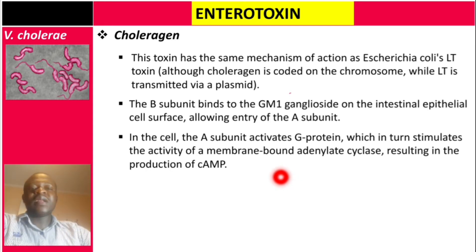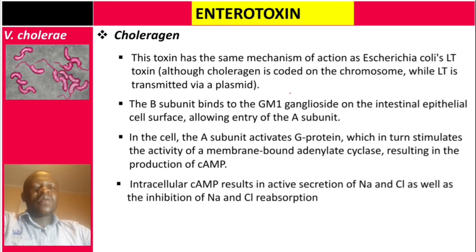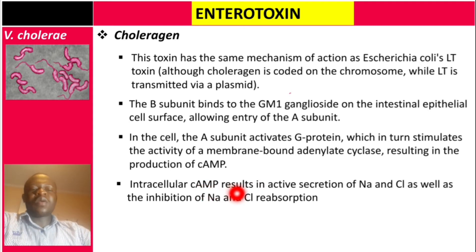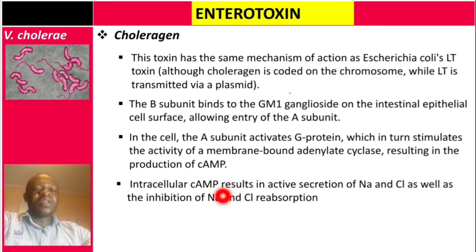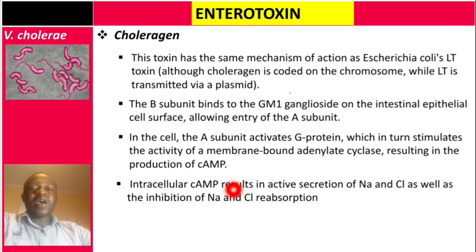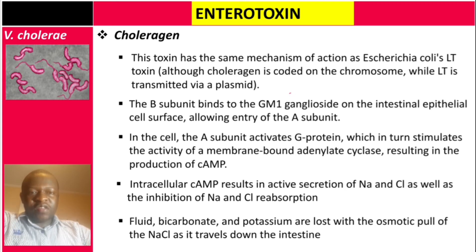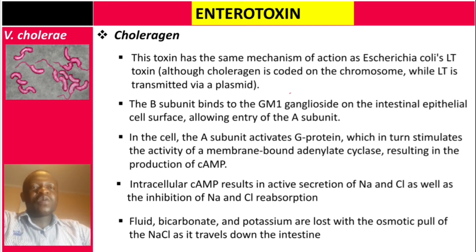This stimulation of the G protein is continuous, resulting in high amounts of cyclic AMP. The elevated intracellular cyclic AMP results in active secretion of sodium and chloride, as well as inhibition of sodium and chloride reabsorption. With no reabsorption, large quantities accumulate in the lumen and water follows — this is the mechanism of dehydration. Fluid, bicarbonates, and potassium are lost with the osmotic pull of sodium chloride as it travels down the intestine.